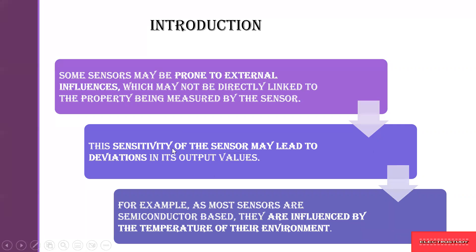How the output keeps changing depends on the sensitivity of the sensor, which plays a major role. When the sensitivity of the sensor is high, there will be more deviation in the output values. For example, semiconductor-based sensors are influenced by temperature, humidity, soil content, or air in their surrounding environment — these are some examples of what a sensor is sensitively active to.